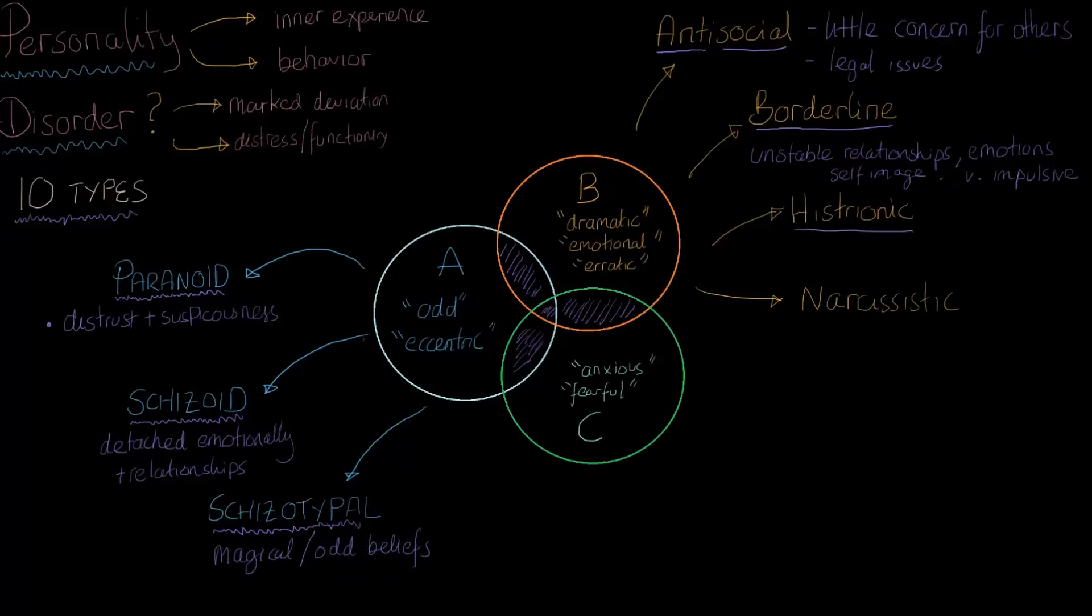We have histrionic. People with histrionic personality disorder are very attention-seeking. They might wear very bright clothes. They might wear things that are very provocative, and they can display a lot of their emotions outwardly.